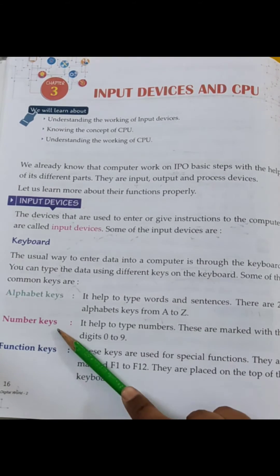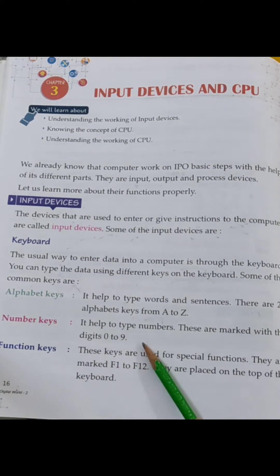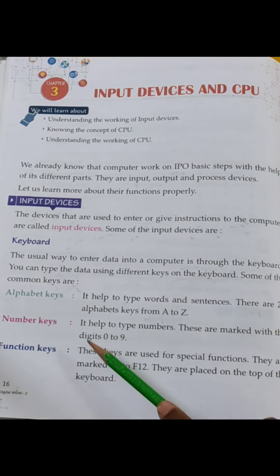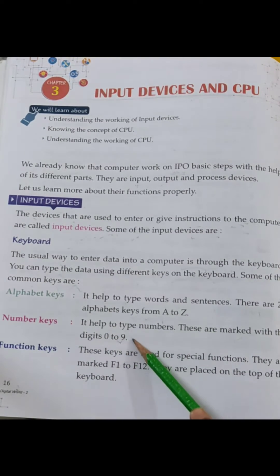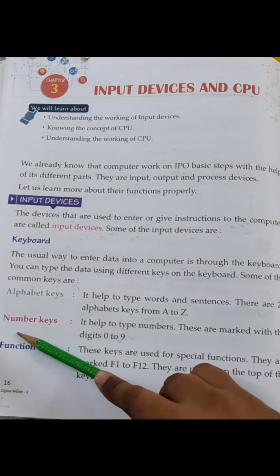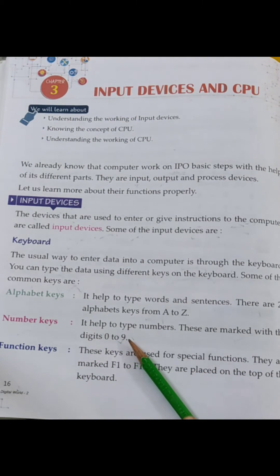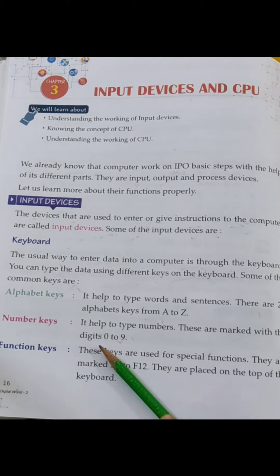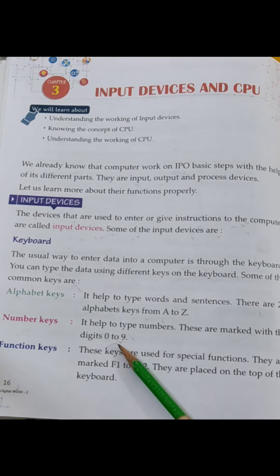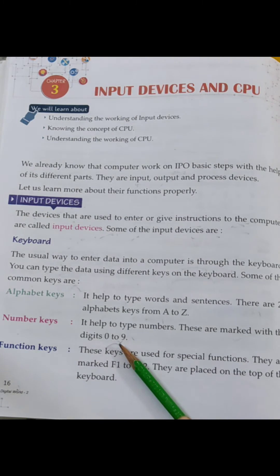Second is Number keys. It helps to type numbers. These are marked with the digits 0 to 9. Number keys जैसे 1, 2, 3, 4 — ये numbers type करने में help करता है. Keyboard पे 1 से 9 तक होते हैं, और फिर 0 होता है — जिससे हम जितने भी numbers चाहिए वो type कर सकते हैं.